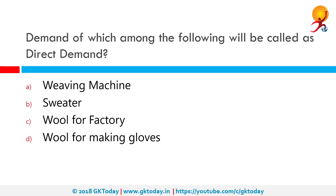In these options, wool for factory, wool for making gloves, and weaving machine are all middle-tier items which are used to make further things. However, a sweater is something that the consumer uses directly. Hence the correct answer is sweater.